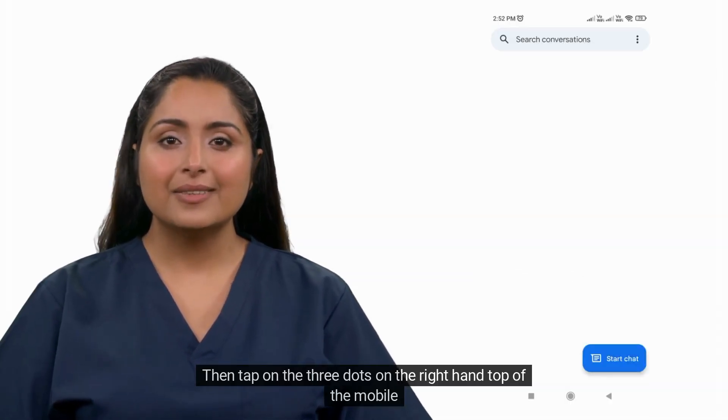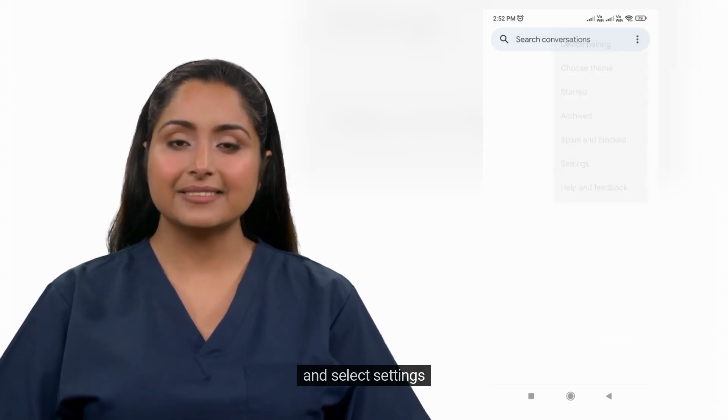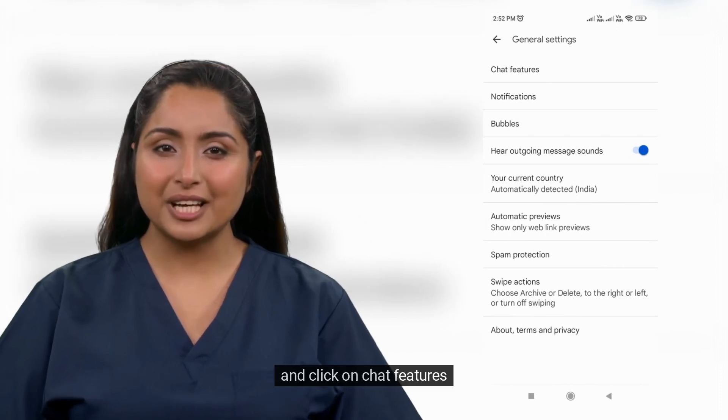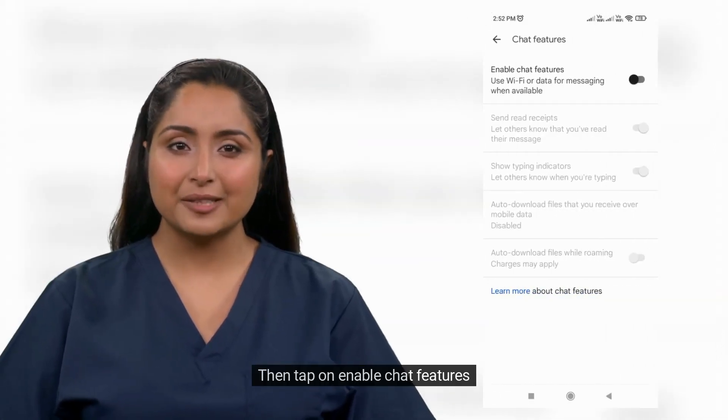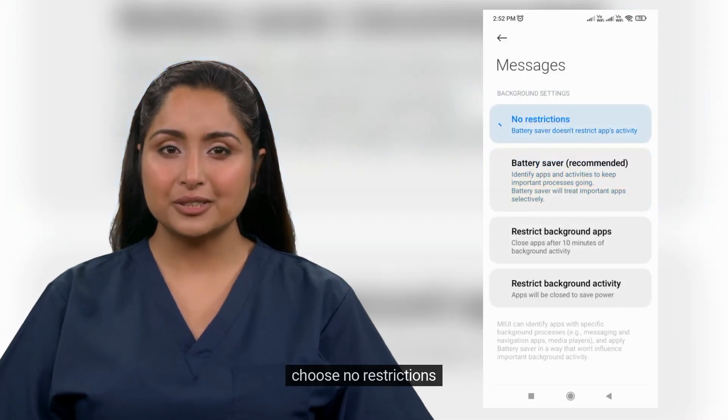Then tap on the three dots at the top right of the screen and select Settings. Go to General and click on Chat Features. Tap on Enable Chat Features and choose No Restrictions.